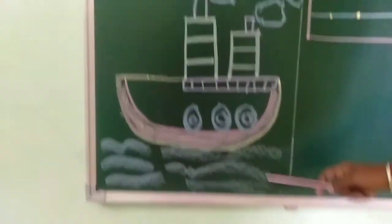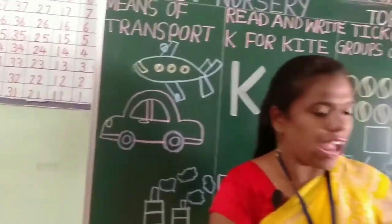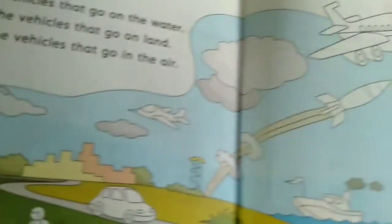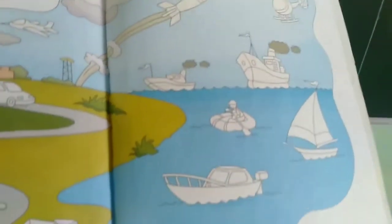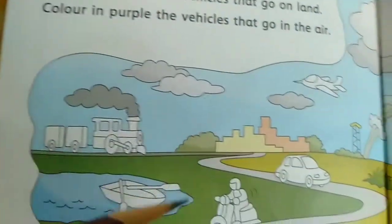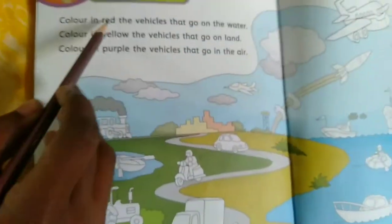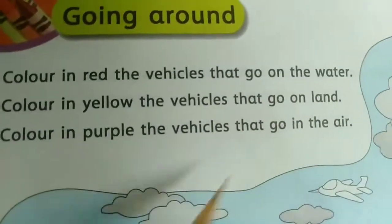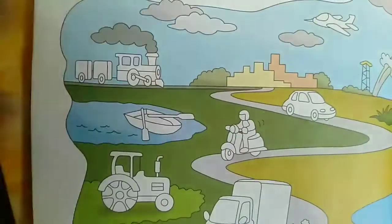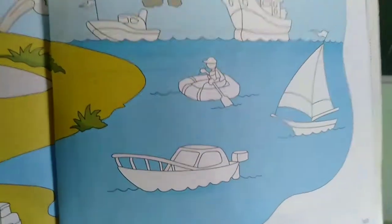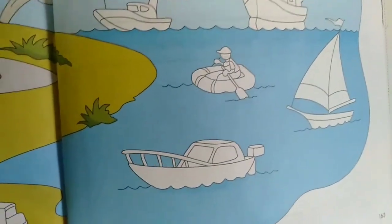According to this, teacher taught you in Activity World 1A book, page number 162 and 163. Here we can see so many means of transport vehicles. What we have to do? We have to do colouring. Colour the vehicles that go on the water with red colour.